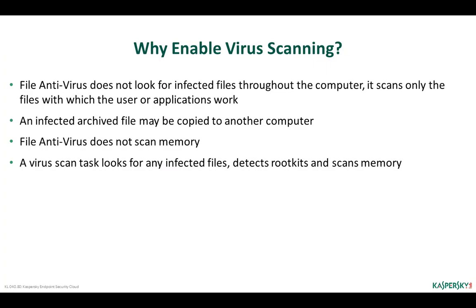File threat protection, behavior detection, and other protection components intercept all operations on the computer and block any infection attempts. However, to ensure optimal performance for other applications, they skip files that are not immediately dangerous, such as archives. If a malicious file is simply stored in a folder and has never been started, it will also remain unnoticed. Real-time protection reacts only to active actions and does not scan for passive threats. To decrease this risk, regularly scan computers for viruses — virus scanning checks all files including archives, scans memory, and looks for rootkits.